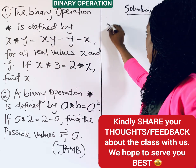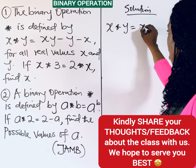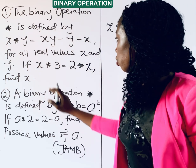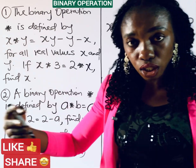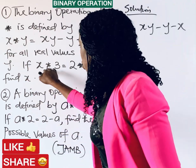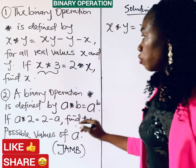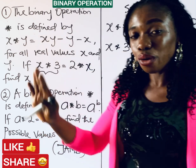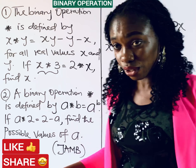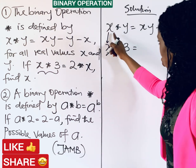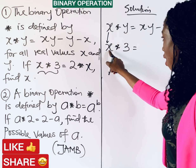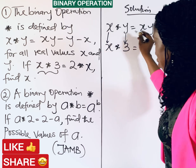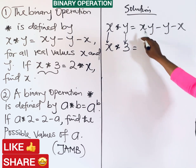So, x operation y is given as xy minus y minus x. We are told real values are values found on the number line. Now, let's deal with x operation 3 first. By substitution, x remains x and y becomes 3.